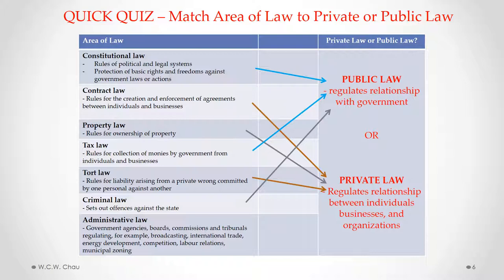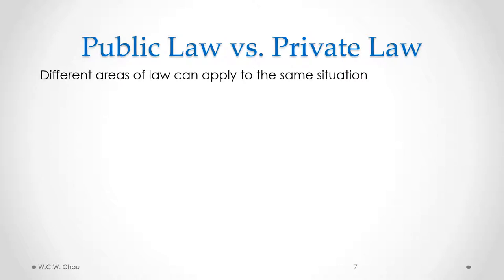The last area of law is called administrative law. A lot of administrative law consists of rules that government has set to regulate business using government agencies, boards, commissions, or tribunals. Some of the areas that administrative law regulates include broadcasting, international trade, energy development, competition, labor relations, and municipal zoning. Administrative law is considered to be public law. One point to keep in mind is that a number of different areas of law can apply to the same situation.